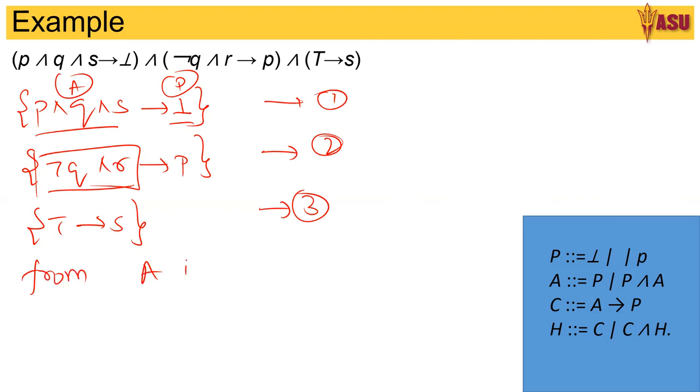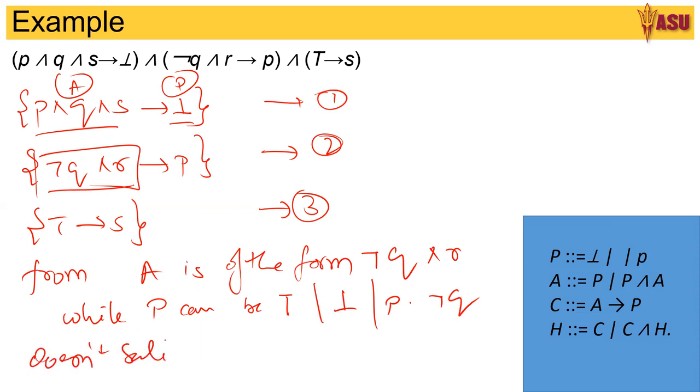So let's write out why P can be true or bottom or a predicate, a proposition P. Not Q does not satisfy the formula. Hence, it is unsatisfiable. This is much easier than the previous case.